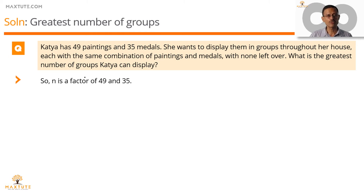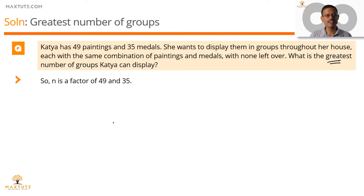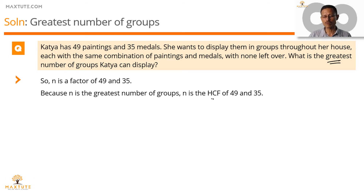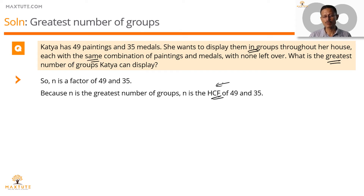N is not just any number of groups — it's the greatest number of groups. So N is a common factor of 49 and 35 and should be as large as possible, which means we're talking about the HCF. The keywords — dividing into groups, having the same combination — led us to HCF, and the systematic approach leads us to the same conclusion. So next time you see these keywords, just go with the keywords. That will save you a lot of time.